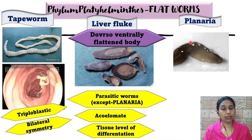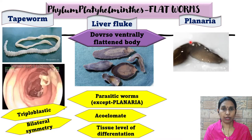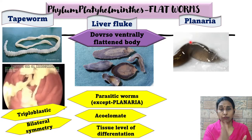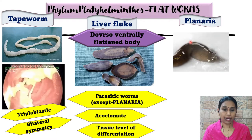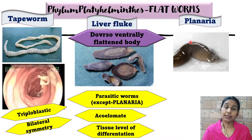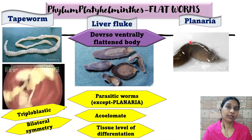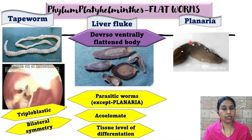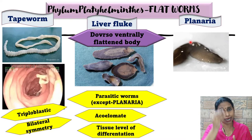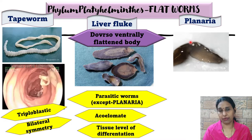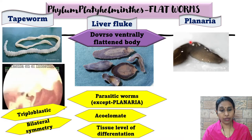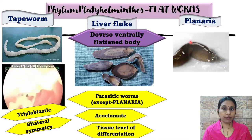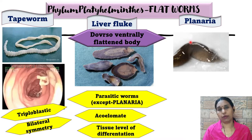Platyhelminthes are bilaterally symmetrical — you get two equal halves if you divide the body through one plane. They are acoelomate organisms, meaning no coelom is present. The coelom will be present only if the digestive tract has completely developed, but here it has not. They have tissue level of differentiation, and because of this tissue level of differentiation, a coelom cannot be formed.